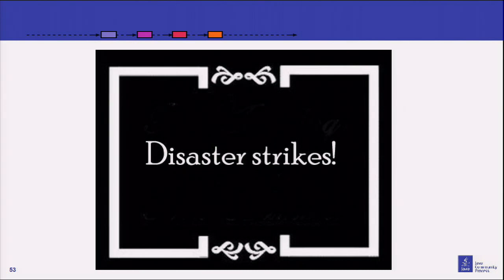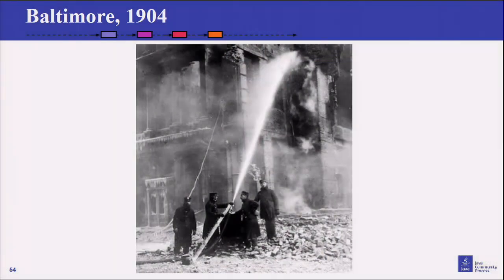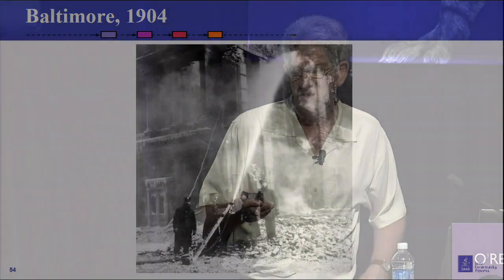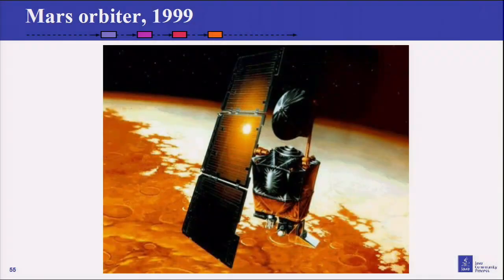Sometimes we create standards because they help to promote industry. Sometimes we do it because something went wrong and we realized we really screwed up. Baltimore, 1904: a big fire, 150 million dollars worth of damage done. They brought in fire engines from all the surrounding cities. Guess what? They couldn't plug their hoses into the hydrants because there was no agreement on the coupling mechanism. After that, they said it might be a good idea if we standardized that. Mars Orbiter, 1999: nine months to get there — boom, it fails. Because the guys who programmed it were using imperial measurements and the guys who built the hardware were using metric. We didn't have an agreement.